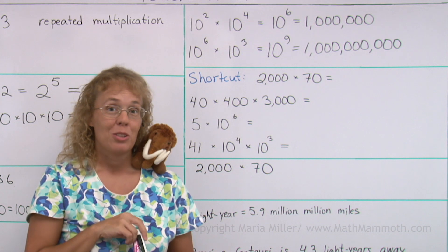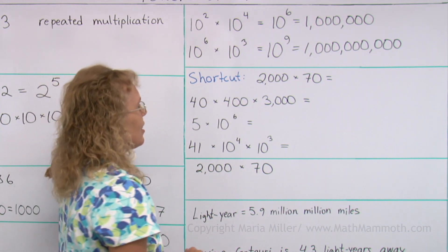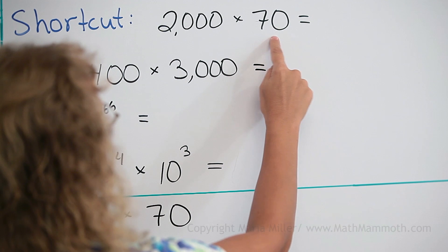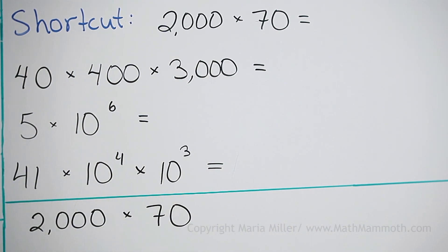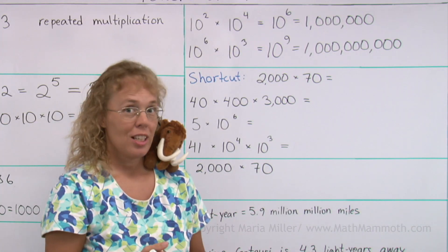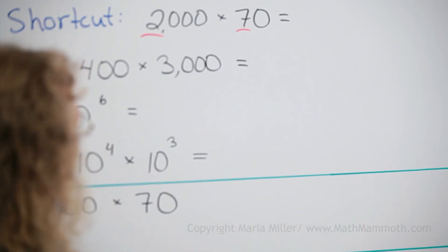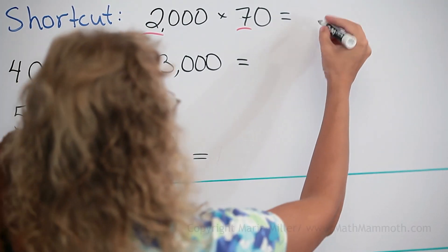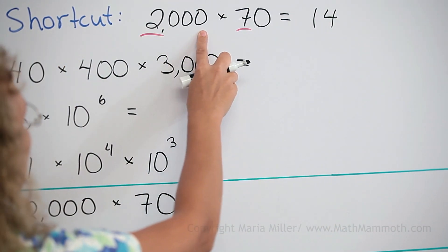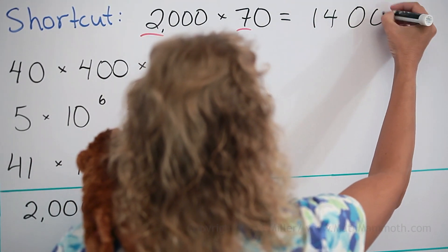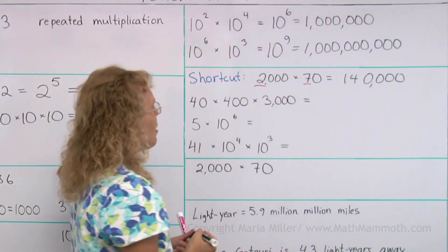Now I want to remind you of an old shortcut for numbers that have lots of zeros at the end. Take 2,000 times 70: the shortcut is to multiply 2 times 7 to get 14, then gather your zeros — there are three and one more, so four zeros. The answer is 140,000.